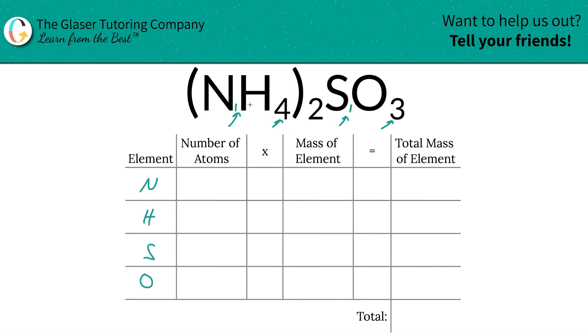Since this is in parentheses, you have to always take into account that outer subscript. So the total amount of nitrogen is found by taking one and multiplying it by two, so that's two.